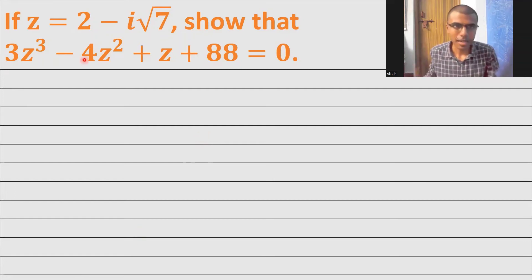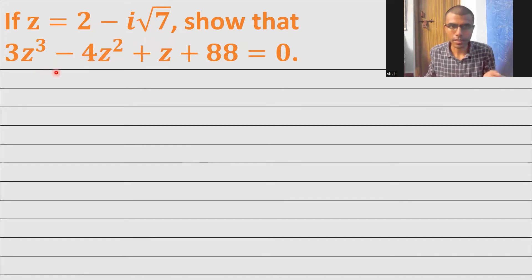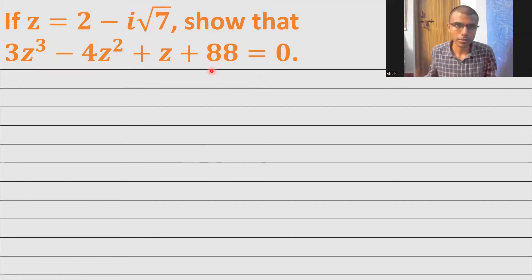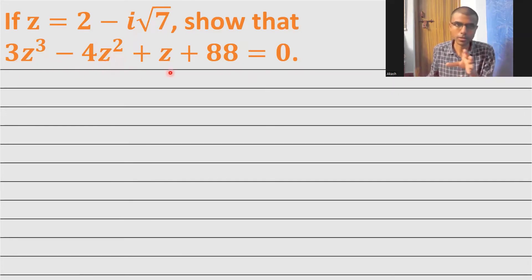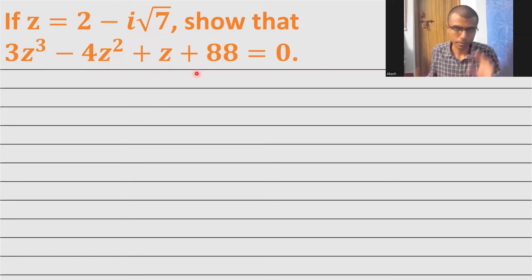Hello learners. Here we have z = 2 - i√7 and we need to show that the expression on the left-hand side is equal to 0. I'm going to first find z², then z³, and then substitute z, z², and z³ values into the expression on the left-hand side and show that the expression turns out to be 0.